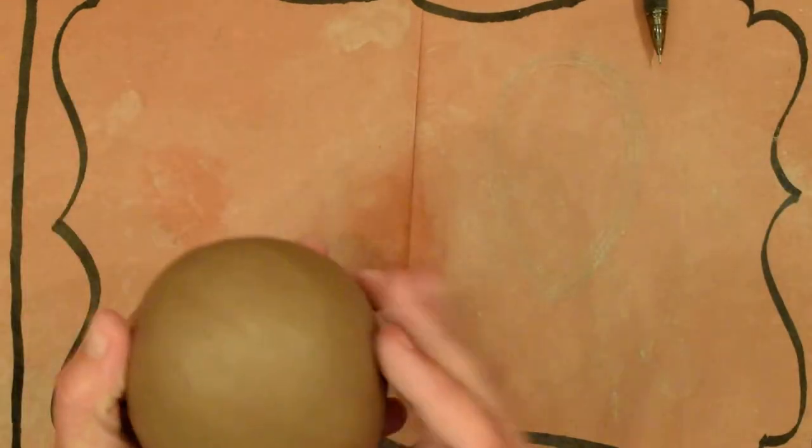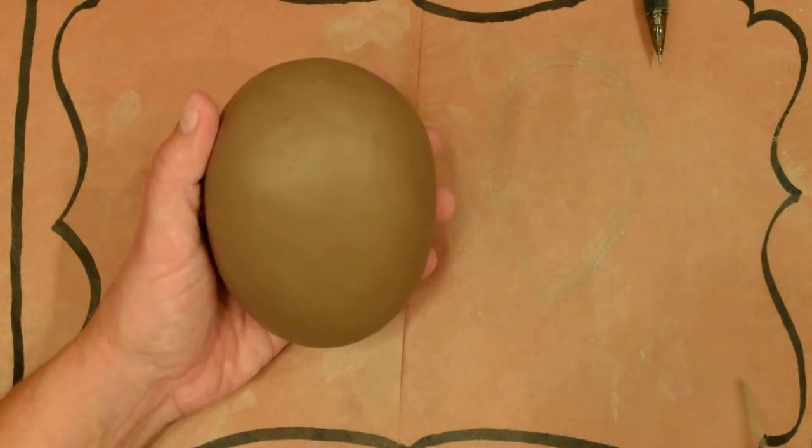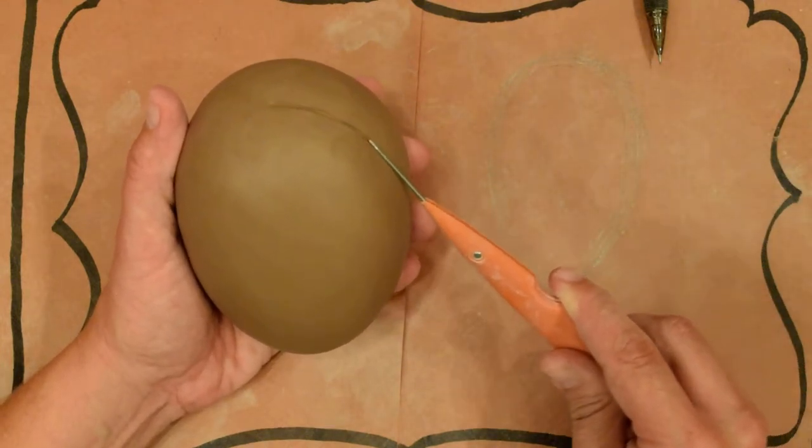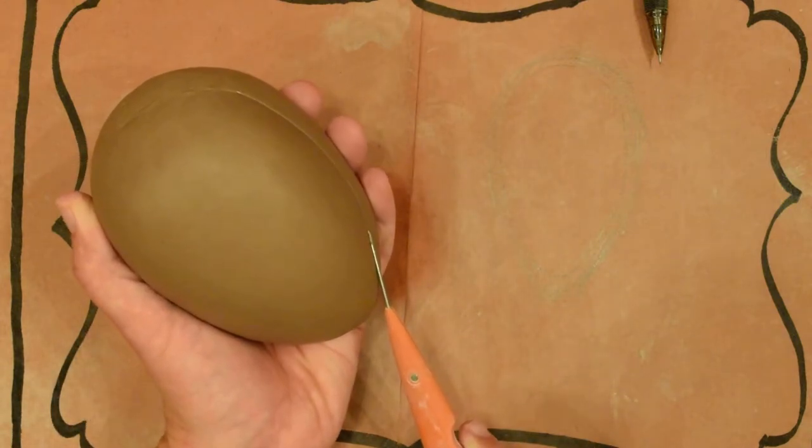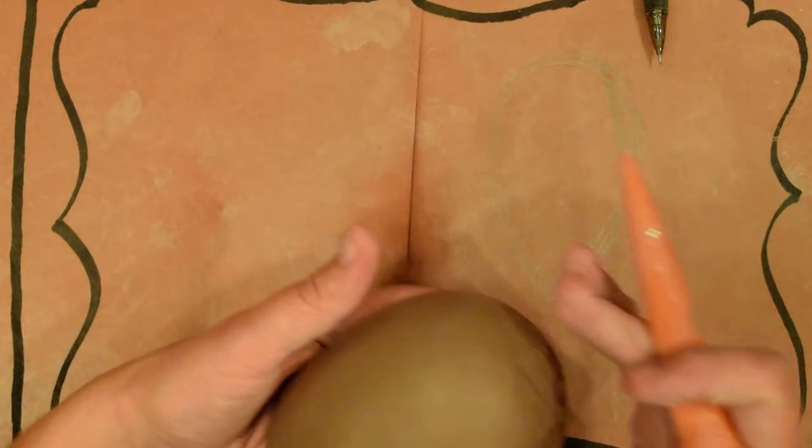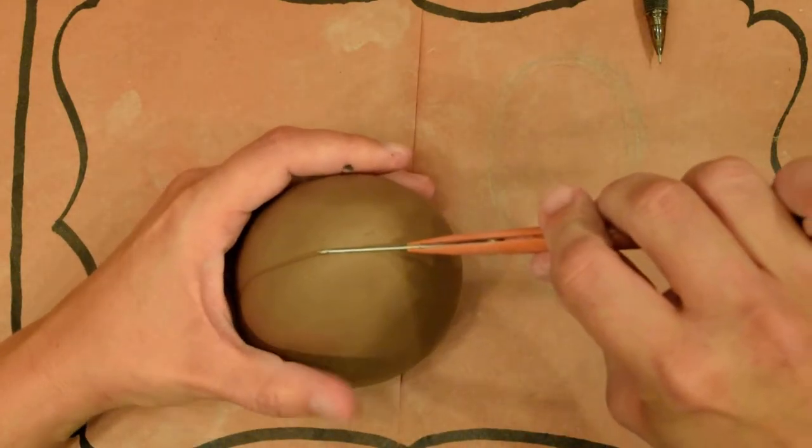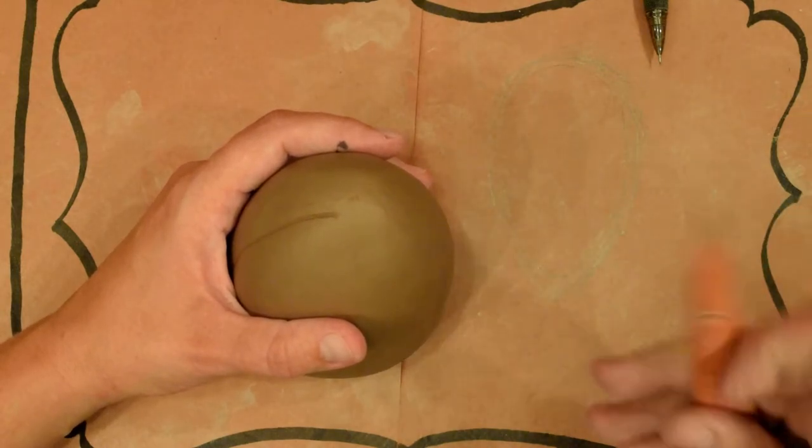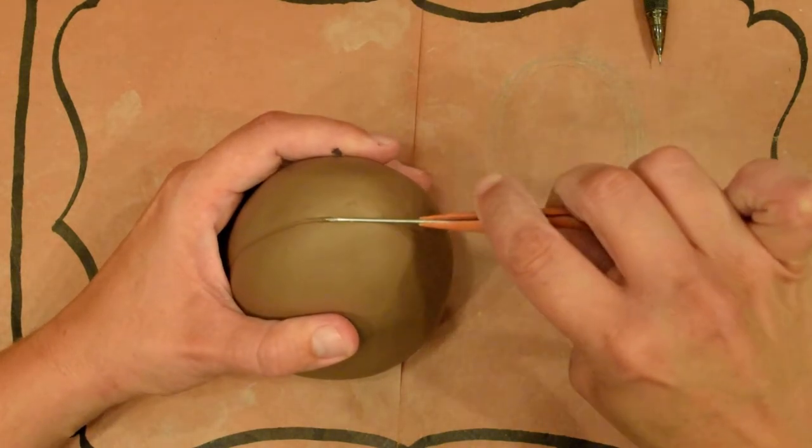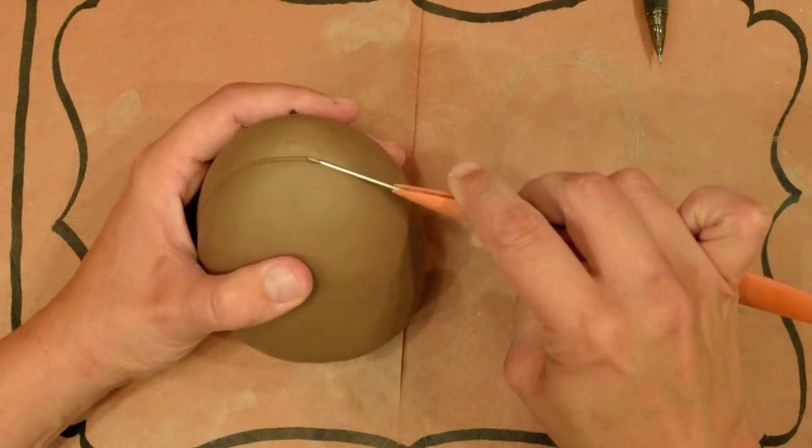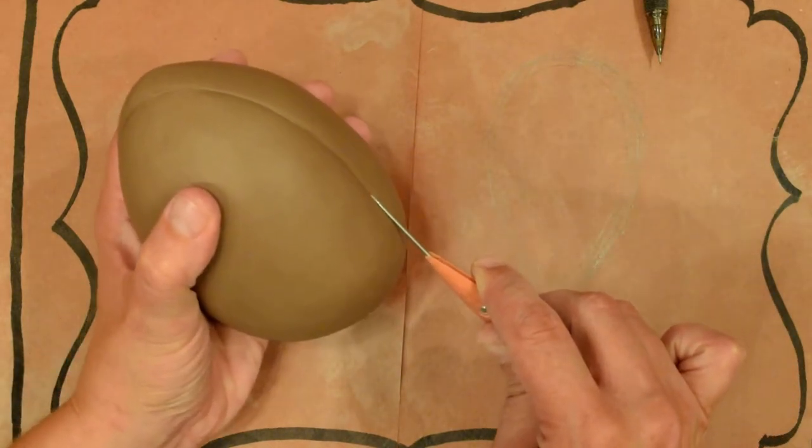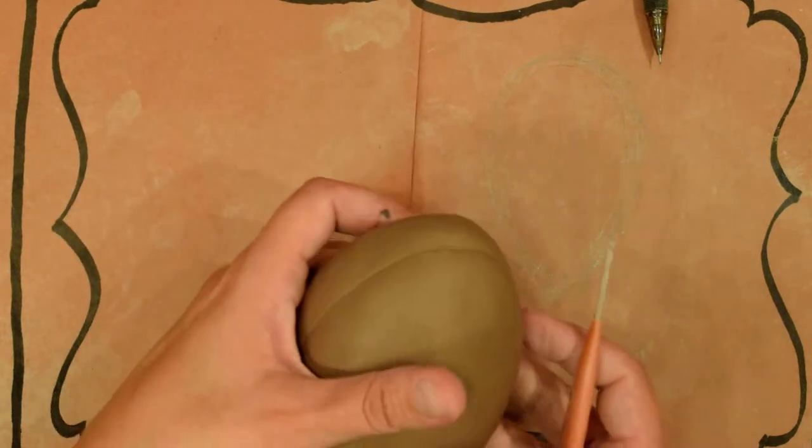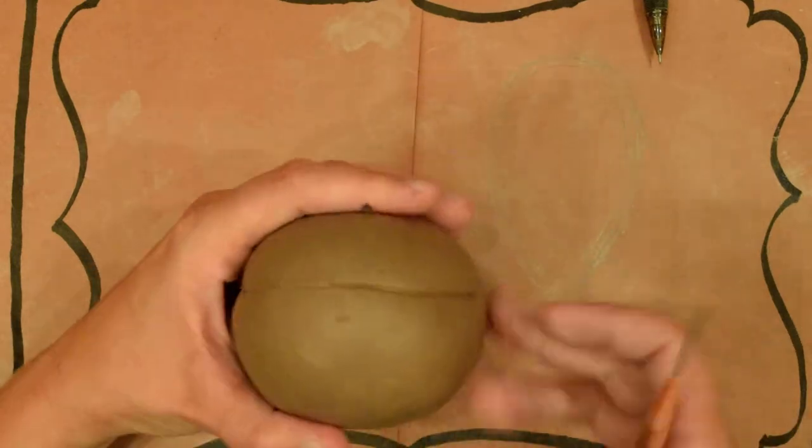So one thing that I could do is take my pin tool and just kind of incise a line. Now notice I'm not using it like a pen, especially at this stage. I'm really dragging it on that surface. Do the same thing to the other side.